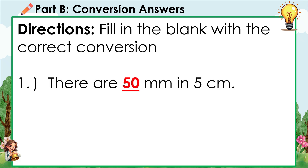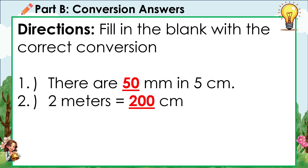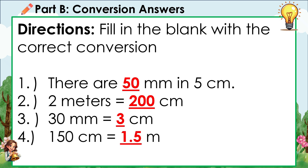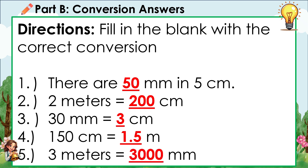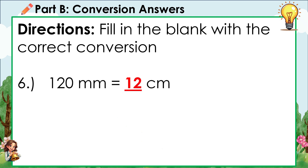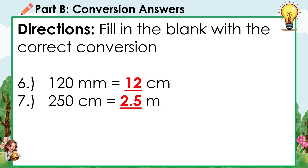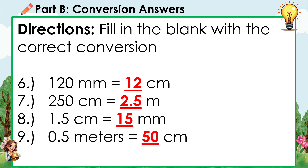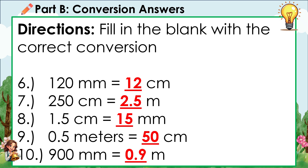Answers Part B: 1. There are 50 mm in 5 cm. 2. 2 m is equal to 200 cm. 3. 30 mm is equal to 3 cm. 4. 150 cm is equal to 1.5 m. 5. 3 m is equal to 3,000 mm. 6. 120 mm is equal to 12 cm. 7. 250 cm is equal to 2.5 m. 8. 1.5 cm is equal to 15 mm. 9. 0.5 m is equal to 50 cm. 10. 900 mm is equal to 0.9 m.